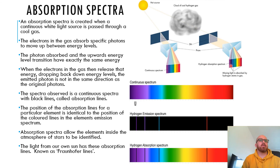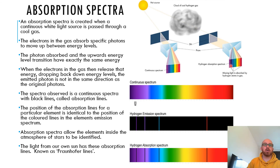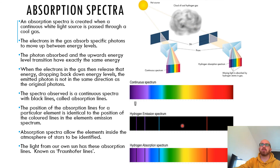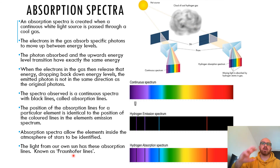The position of the absorption lines for a particular element is identical to the position of the coloured lines in that element's emission spectrum. Absorption spectra allow the elements inside the atmosphere of stars to be identified. By comparing the dark lines to emission spectra for known elements, we can figure out what elements are in the star. Our own sun has absorption lines known as the Fraunhofer lines — you can Google these and see a continuous spectrum with many black lines corresponding to elements in the sun's atmosphere.